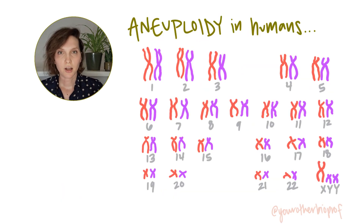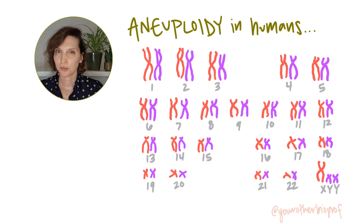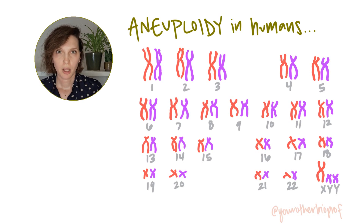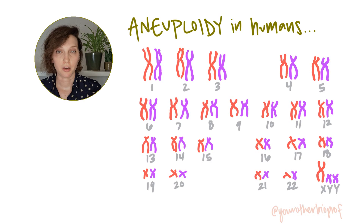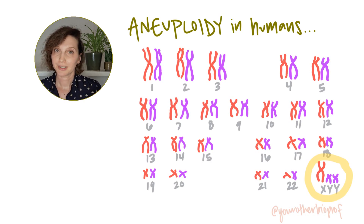In the context of humans, most embryos that are missing chromosomes or that have extra chromosomes don't survive. But some aneuploidies are tolerated better than others, particularly aneuploidies of the sex chromosomes. So let's look at some examples.